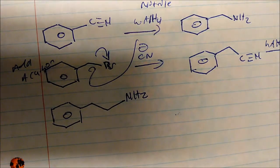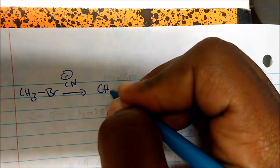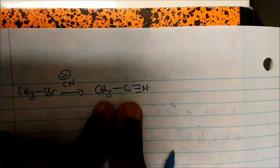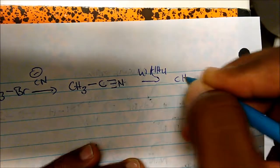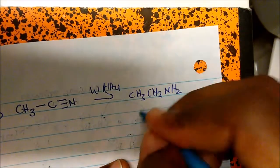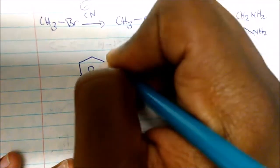When we take the nitrile and reduce with lithium aluminum hydride, we get an amine with an added carbon. For example, if we take methyl bromide and add CN⁻, we get CH3–C≡N. The carbon is the nucleophile — notice we just added a carbon. When we then reduce with lithium aluminum hydride, we get ethylamine (CH3CH2NH2). So nitrile reduction adds one carbon to the chain.